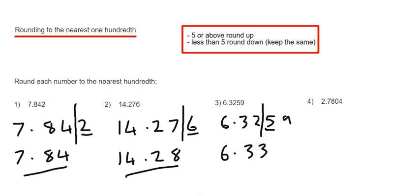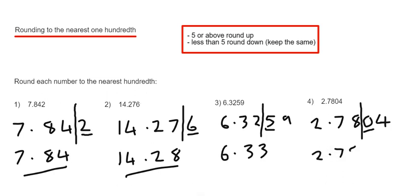Let's do one final example. Our final one is 2.7804. We put a line in two numbers after the decimal point. We've got two choices: we can either round the number down to 2.78 or round the number up to 2.79. The number after the line is a 0. Since this number is less than 5, we keep the number the same as 2.78.